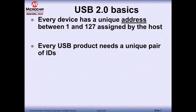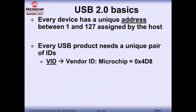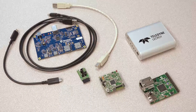Every USB product needs a unique pair of identifiers. The first is the VID, Vendor ID, which you get from the USB Implementers Forum with your membership. Microchip is a member and has the Vendor ID 0x04D8. You can see the Vendor ID of any device plugged into your laptop using the Device Manager. So if you're using a Microchip device like the PIC32 or any of our demo boards with our code, that's the Vendor ID you'll see — 0x4D8 hexadecimal.